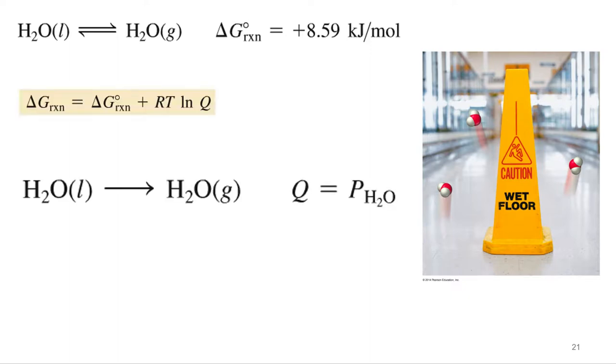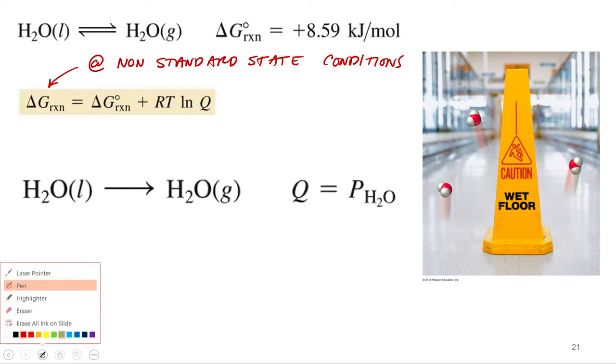And so what we have to do is we're going to have to calculate delta G at non-standard state conditions. So to calculate delta G at non-standard state conditions, we've got delta G at standard state conditions. R, that's the ideal gas constant, and we're going to need it in terms of energy, so we're going to use 8.314 joules per mole Kelvin.